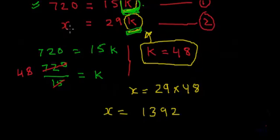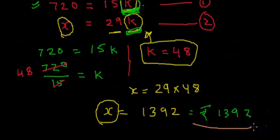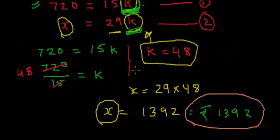So x = 29 × 48 = 1392. The cost of 29 books was x, and we have found the value of x to be 1392. So whichever method we use, we get the same value. But I prefer the method in which we don't calculate the value of the constant, because in that case I save one calculation. In this particular problem, you may not realize the effectiveness of that first method, but when we get slightly complex equations, every calculation matters.